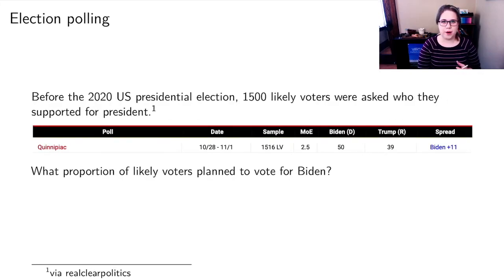So let's think a little bit about election polling. Before the 2020 presidential election, this polling company, Quinnipiac, I think is how it's pronounced, did a poll of 1500 likely voters, and they asked, who do you support for president? And the question is, what proportion of likely voters planned to vote for Biden in this poll? And that's this number right here, it looks like 50% of voters. So I could write that as 0.50 if I wanted to. And I could say that that is p hat, because it's from a sample.